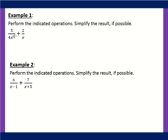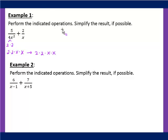We have 4x² and x. If I think about 4x² broken up into its parts, 4 is 2 times 2, so it would be 2 times 2 times x times x. X doesn't need to be broken down further. So if we write out our common denominator, we need 2 times 2, we need x times x, but since the first denominator already has x² and the second just has x, 4x² is actually our common denominator.